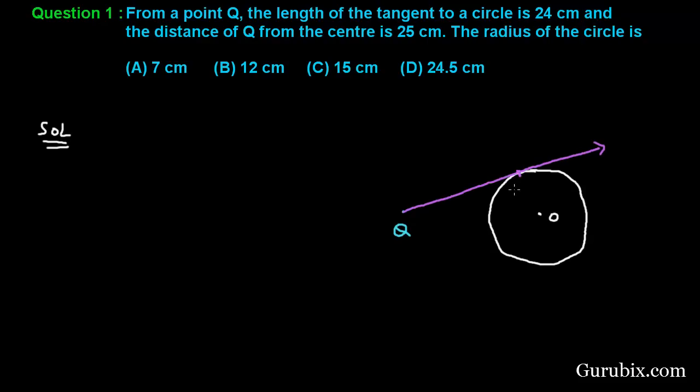This is the tangent which touches the circle at point P. It is also given that the distance between point Q and O is 25 cm, and this is 24 cm.